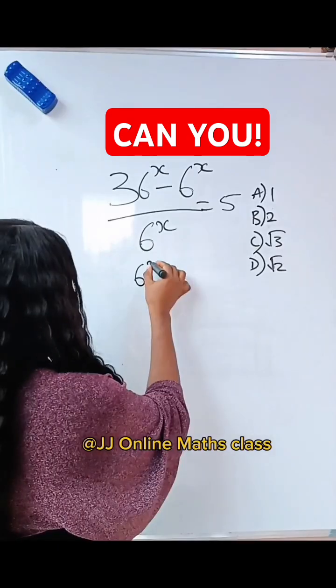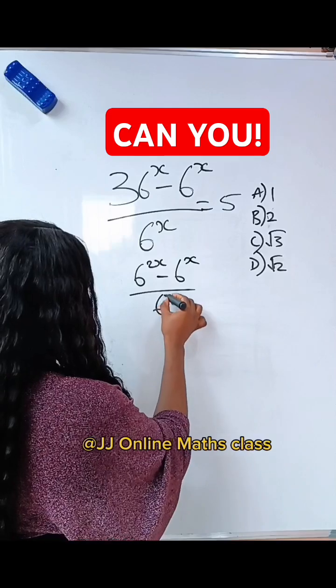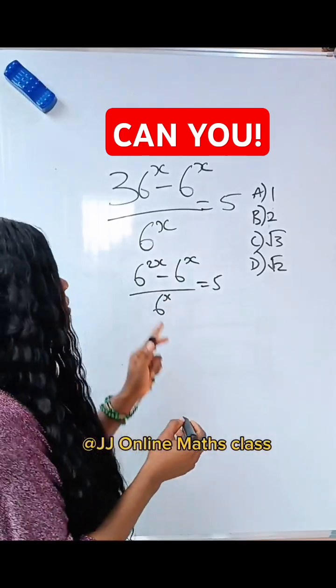So 36 is written as 6 to the power of 2. We have x already, and 6 to the power of x over 6 to the power of x is equal to 5. Now,